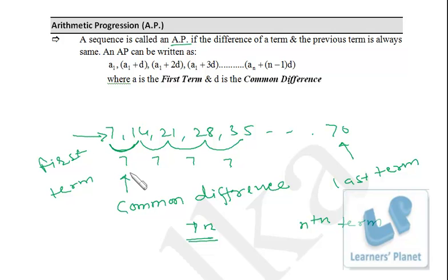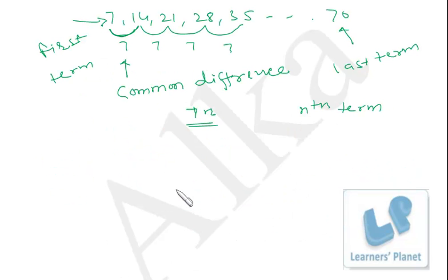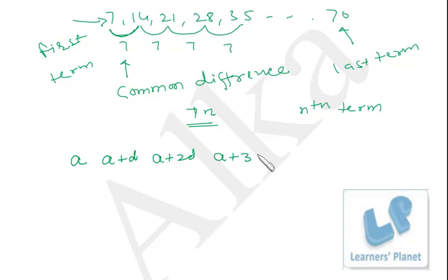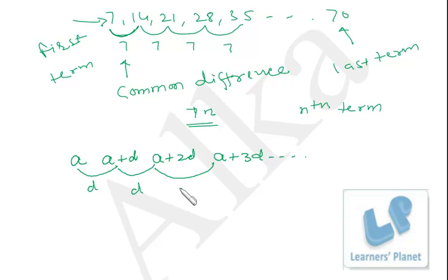Now let's generalize. If the first term is a, then the second term is a+d, the third term is a+2d, the fourth term is a+3d, and so on. The difference between each consecutive pair is d, which is the common difference. So all of these — a, a+d, a+2d, a+3d — are terms of an AP.